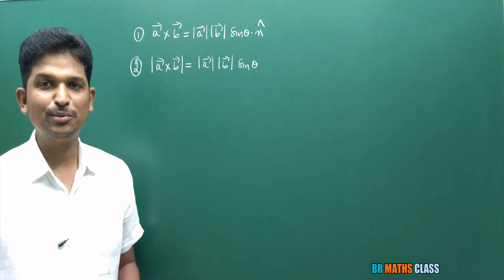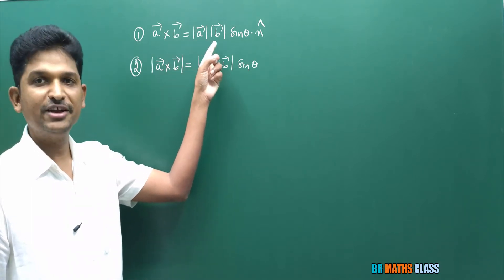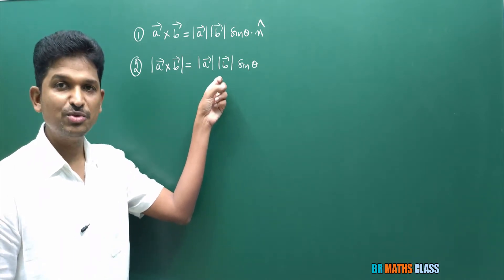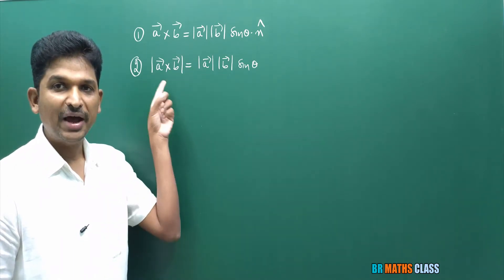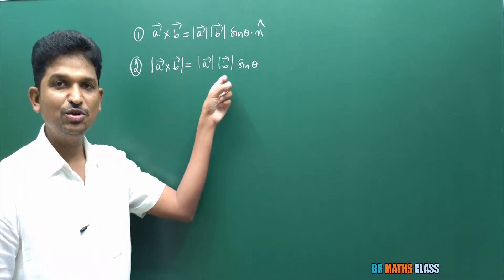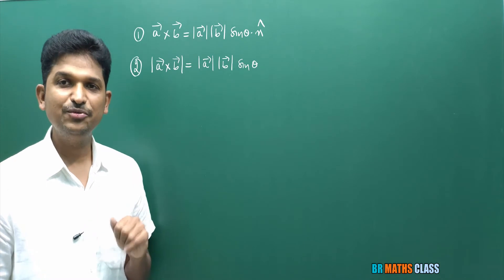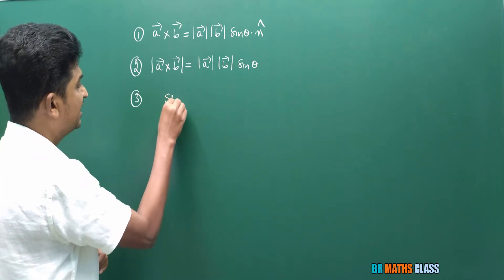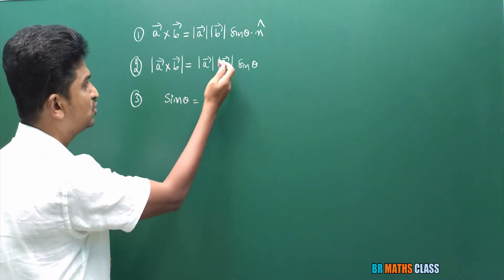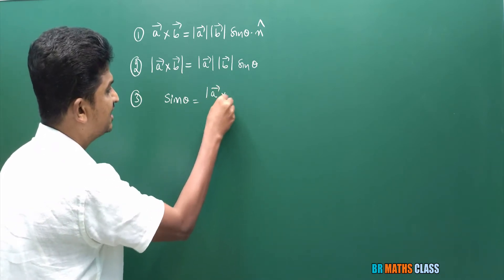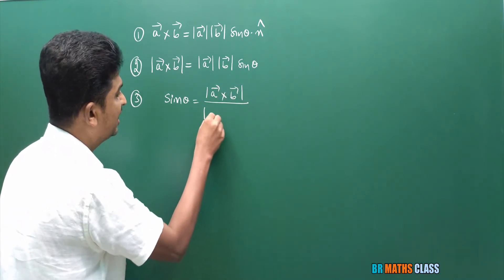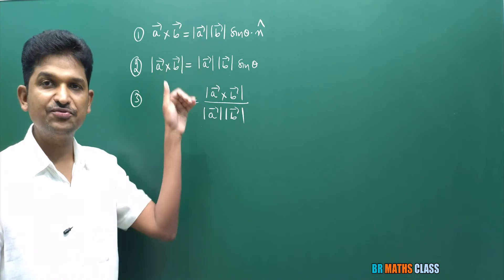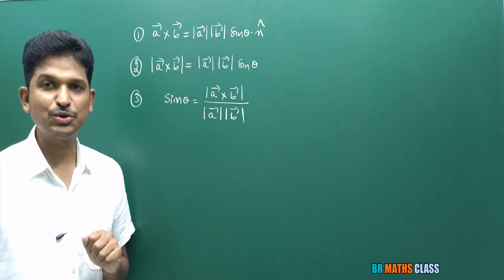So till now you have learned two formulas. a̅ cross b̅ = |a̅| |b̅| sine theta n̂, and magnitude of a̅ cross b̅ = |a̅| |b̅| sine theta. From this second formula, we can derive sine theta: sine theta = magnitude of a̅ cross b̅ divided by magnitude of a̅ into magnitude of b̅. All these three formulas come from the definition of cross product of vectors.